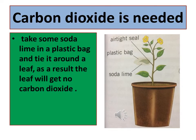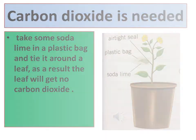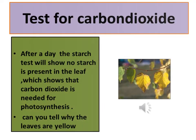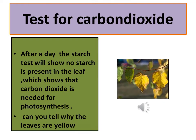To show that carbon dioxide is needed for photosynthesis, take some soda lime in a plastic bag and tie it around a leaf. As a result, the leaf will get no carbon dioxide. After a day, the starch test will show no starch is present in the leaf, which shows that carbon dioxide is needed for photosynthesis.